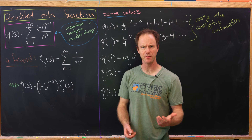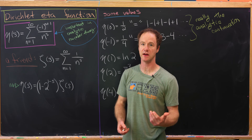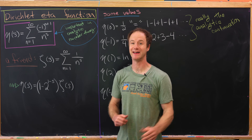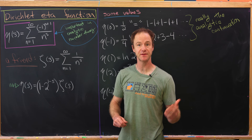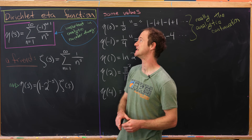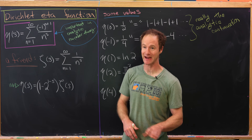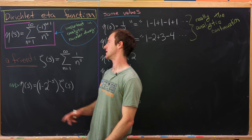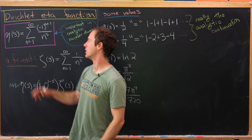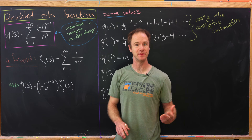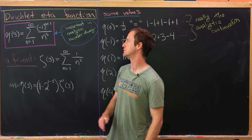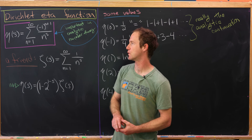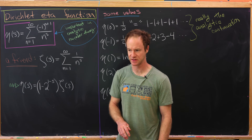Today we're going to look at a function that's really important in a branch of number theory known as analytic number theory, and this function is the Dirichlet eta function. So eta of s is the sum as n goes from 1 to infinity of minus 1 to the n plus 1 over n to the s.